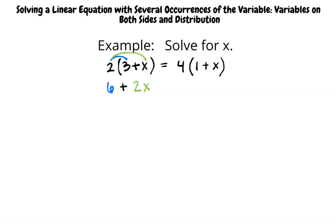On the left-hand side of the equation, we multiply 2 times 3, and then 2 times x to get 6 plus 2x. We then do the same operation on the right-hand side of the equation and get 4 plus 4x.